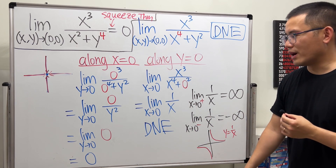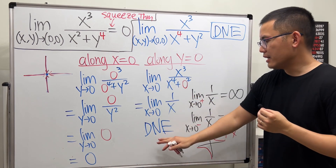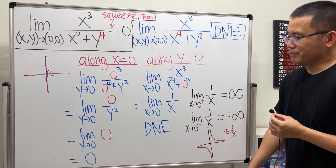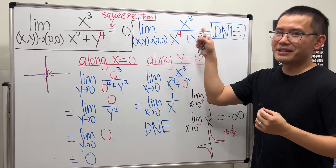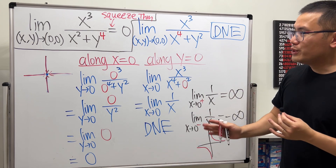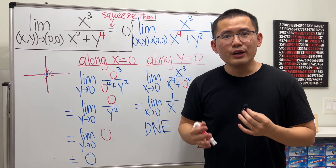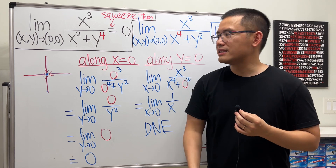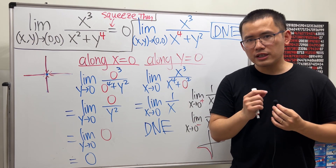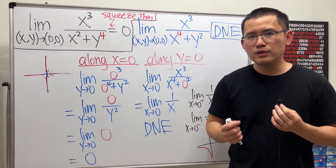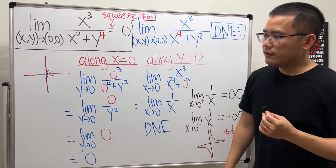Since the path along x = 0 gives a limit of 0 and the path along y = 0 gives a limit that does not exist, this is enough to conclude the overall limit does not exist. Be very careful: when using polar coordinates and you end up with zero over something involving cosθ or sinθ, the only safe conclusion is when you have r times something bounded. Make sure to check the previous video for the full methods.